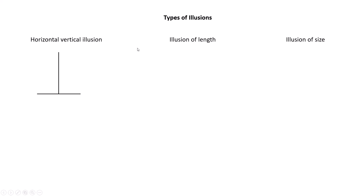Another type is the illusion of length. Two lines of the same length are shown, and when arrow marks are placed at the ends — one with outward arrows and another with inward arrows — one line looks longer than the other. But actually both lines are the same length. This is the illusion of length.